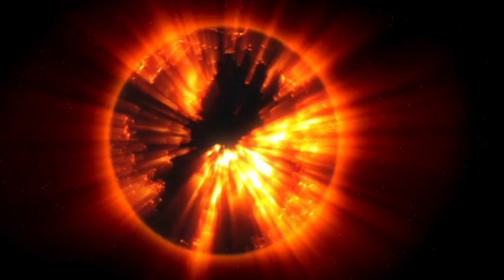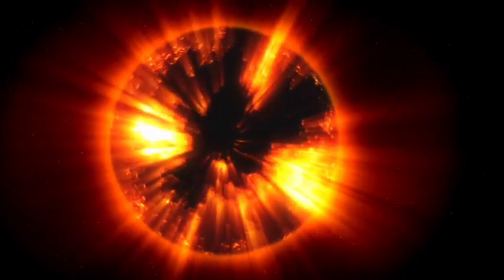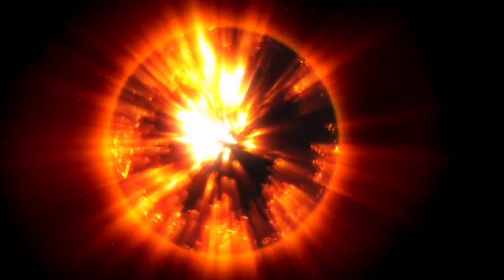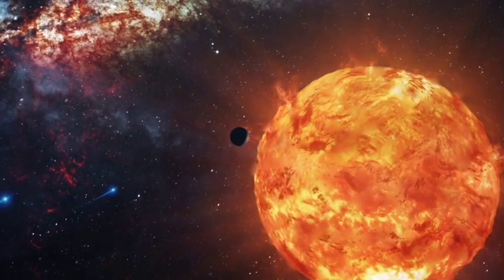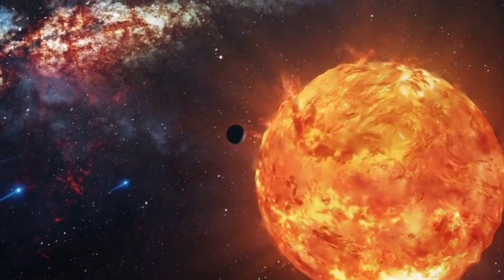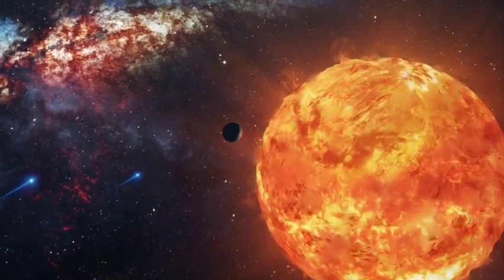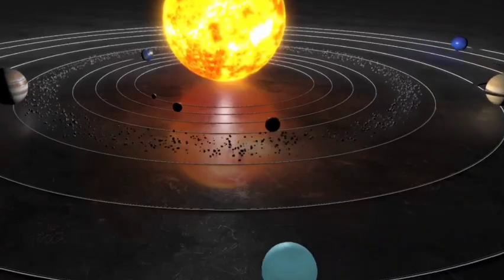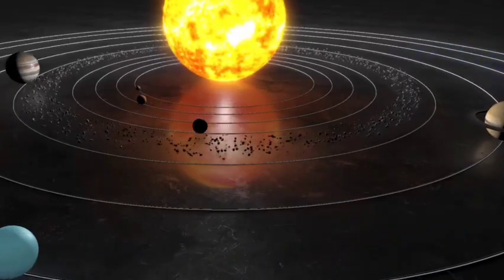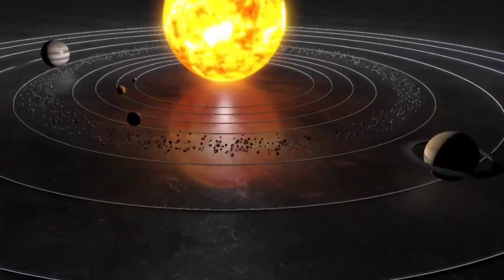Pluto's journey around the Sun is unlike any other planet in our nearby planetary system. It requires a stunning 248 years to complete a single orbit. This means that since its discovery in 1930, it hasn't even completed one full revolution.